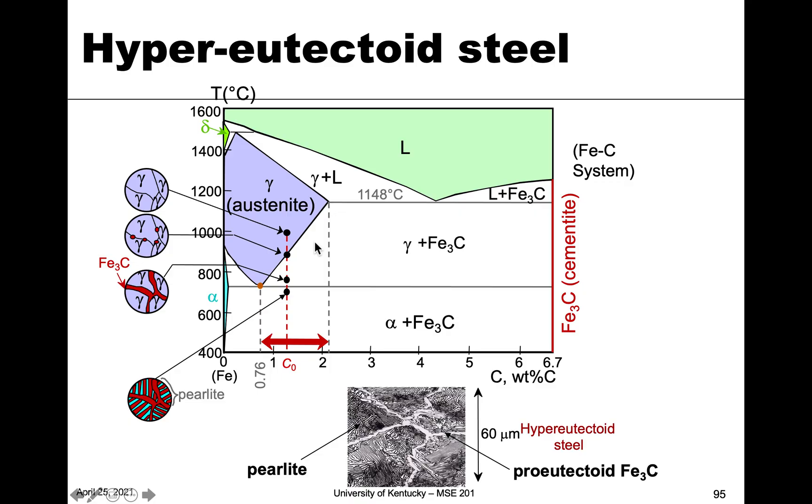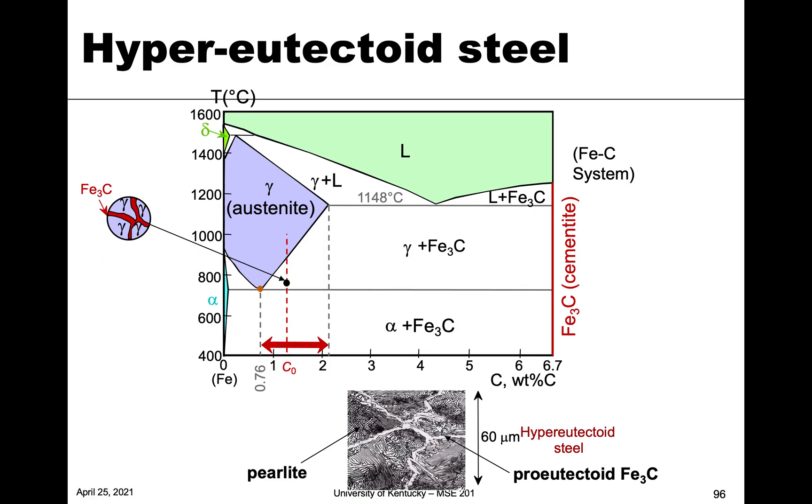And we can get the amounts in the same way. We can determine how much pro eutectoid cementite there is, and perlite by doing the lever rule above. And then we can use the lever rule below to get the overall amounts of the phases, alpha and cementite. So V in X, as opposed to the capital V in X.